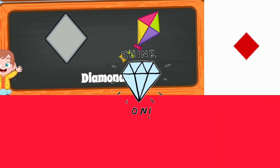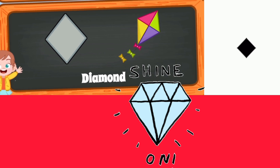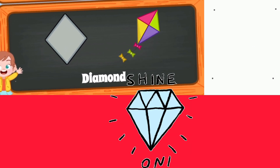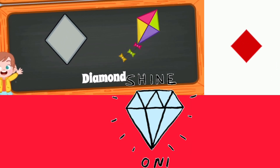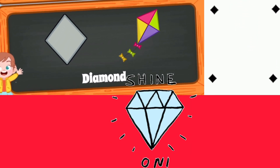This is a diamond. A diamond shape has four sides.